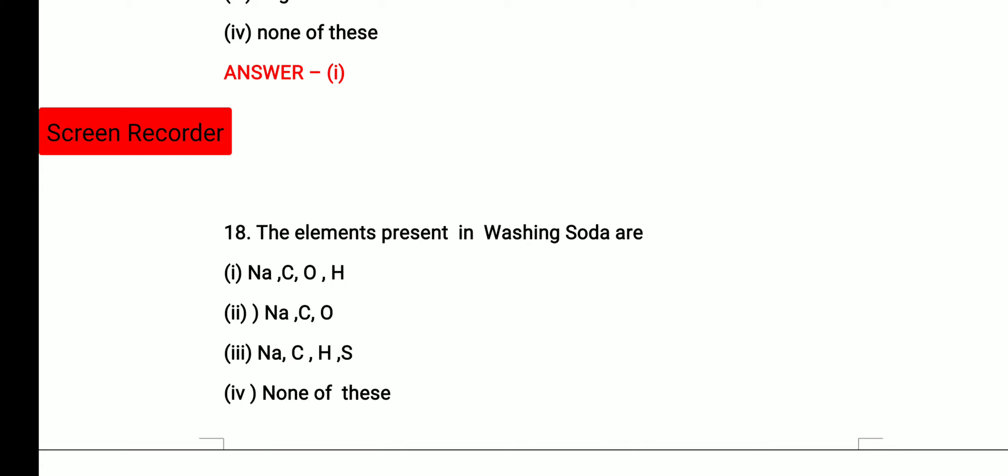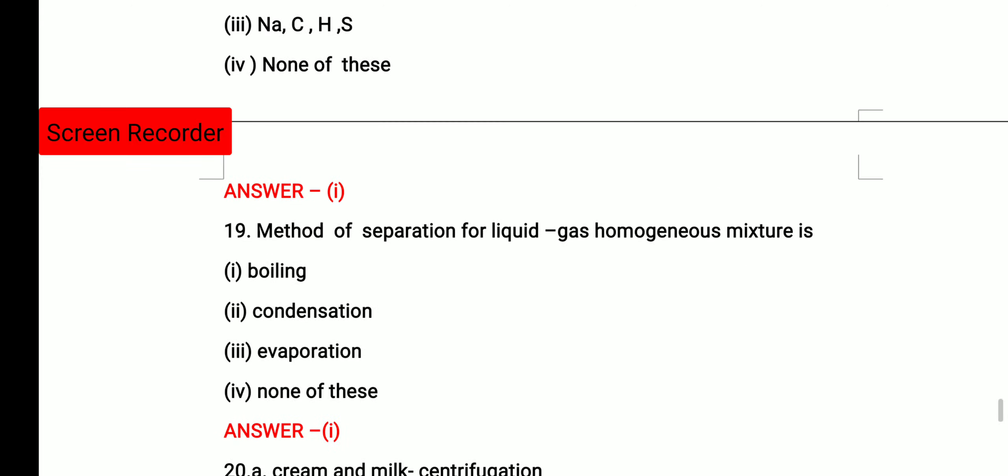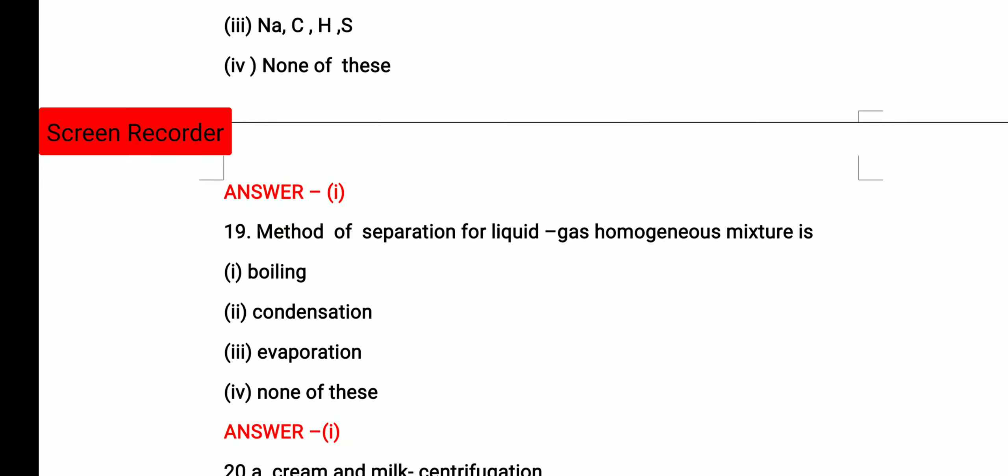Then the elements present in washing soda. Answer of it is sodium, carbon, oxygen and hydrogen. Then method of separation for liquid gas homogeneous mixture. So liquid gas homogeneous mixture is separated by boiling. Like water, when you boil water, whatever gas dissolved in water gets evaporated. So gas is separated from the liquid.